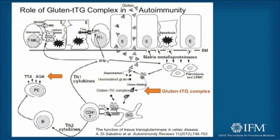I wanted to show this diagram again because I always wonder why tissue transglutaminase — why is our body attacking self? You can see that it can actually form a complex with gluten that then becomes antigenic, stimulating again the people who are predisposed, like HLA-DQ-2s. You get tissue transglutaminase antibodies and anti-gliadin antibodies. And up there, the matrix metalloproteinases are breaking up the lining, causing cell death — so it's fueling the fire and continuing to cause leaky gut.